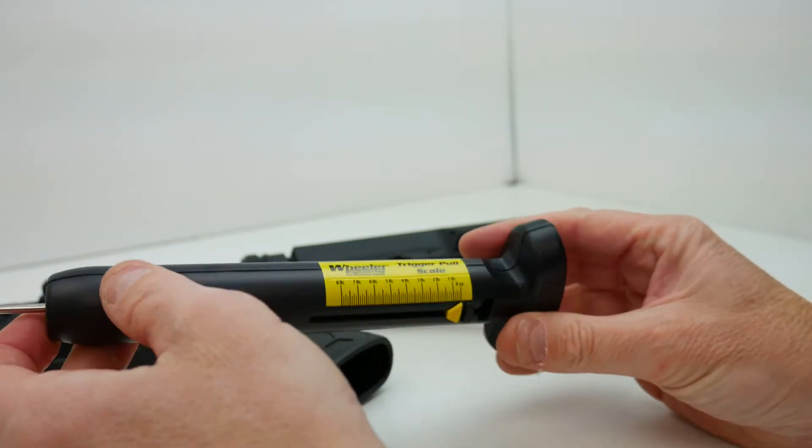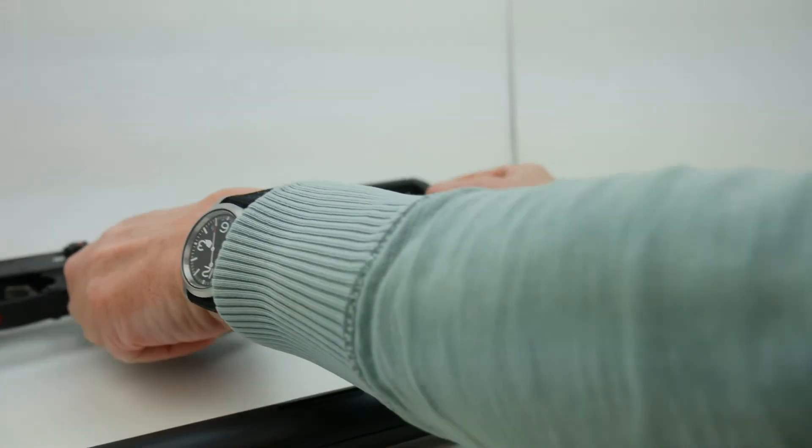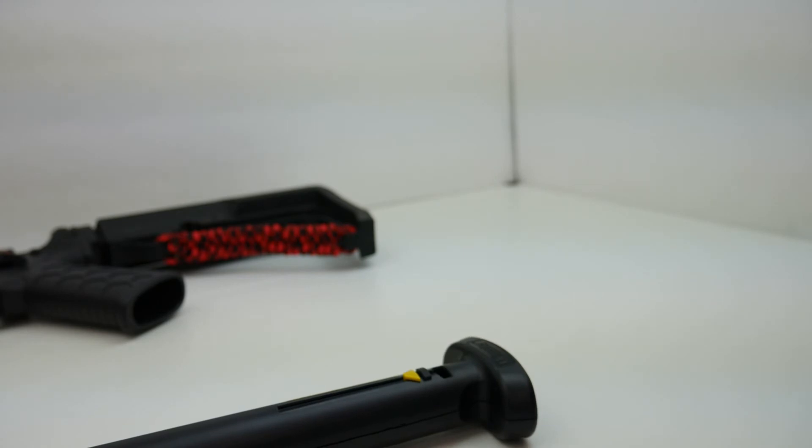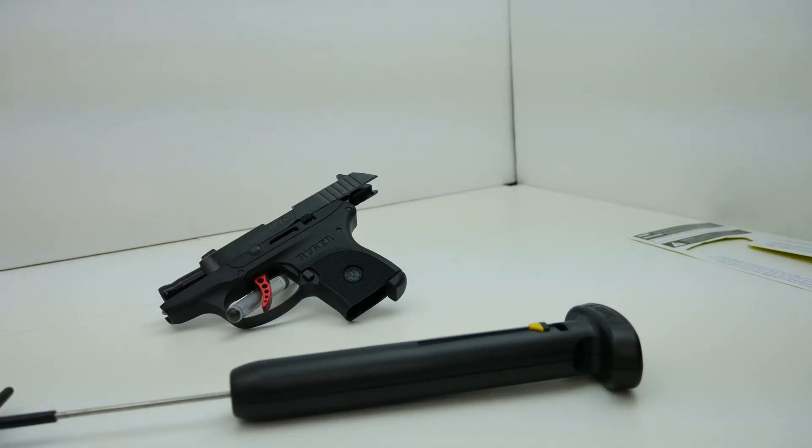So that's how we use it on a rifle. Let me grab a pistol and we'll try it on pistol as well. Okay I've got my Ruger LCP Custom here and we're going to test this Wheeler pull scale on this pistol.